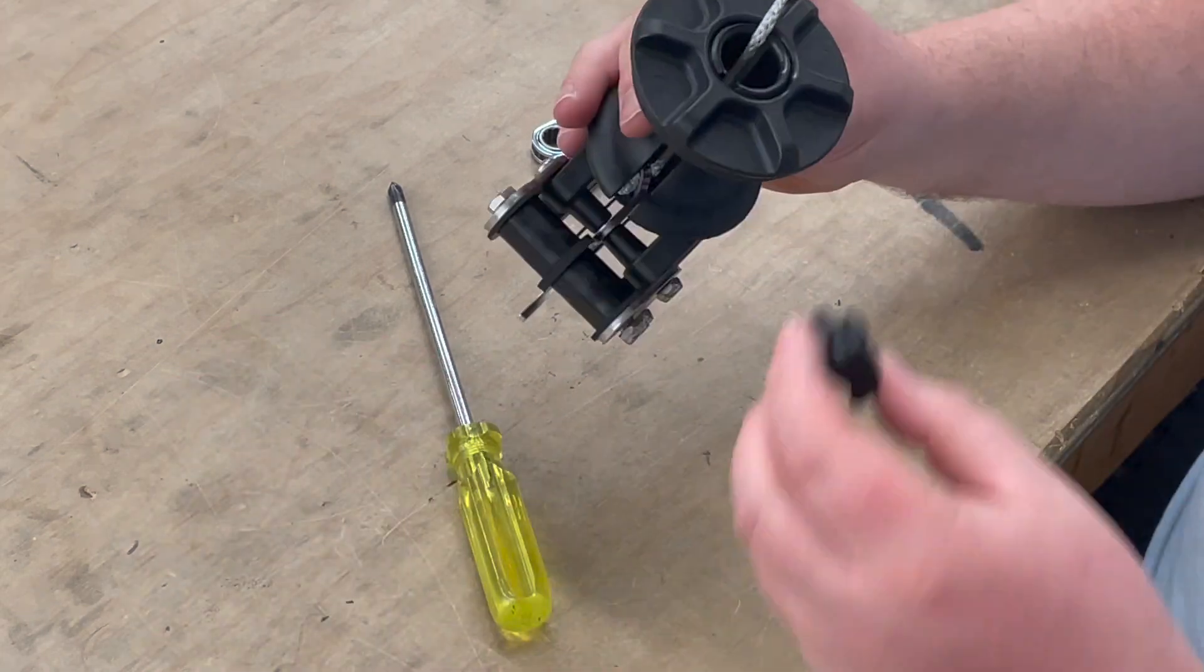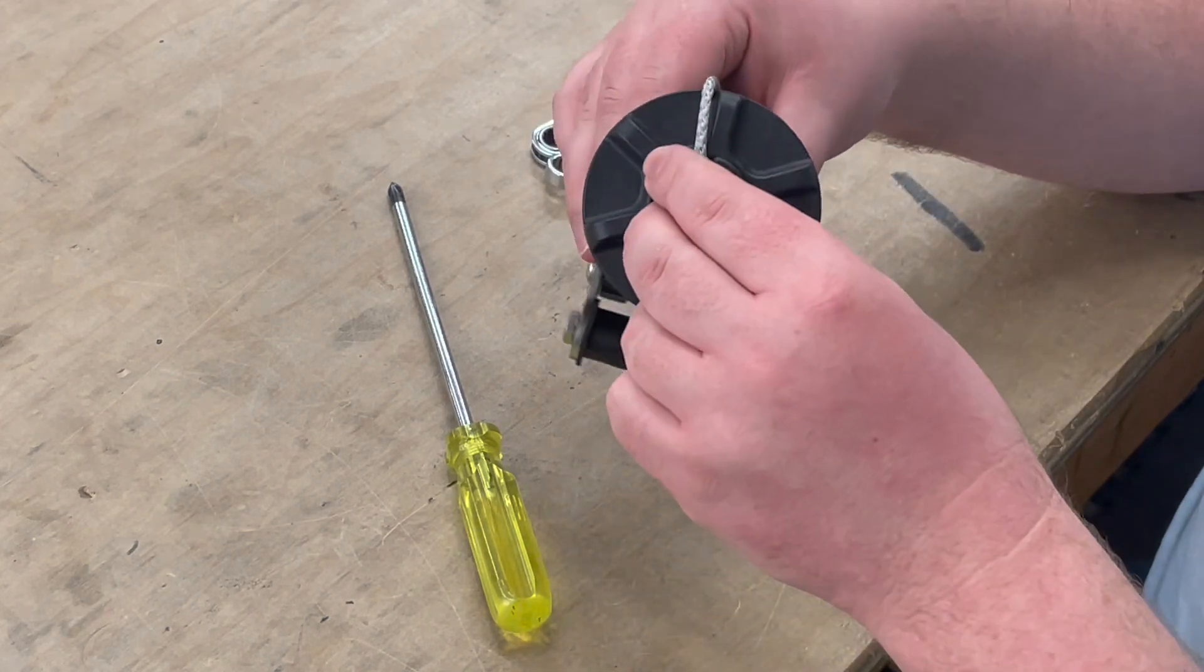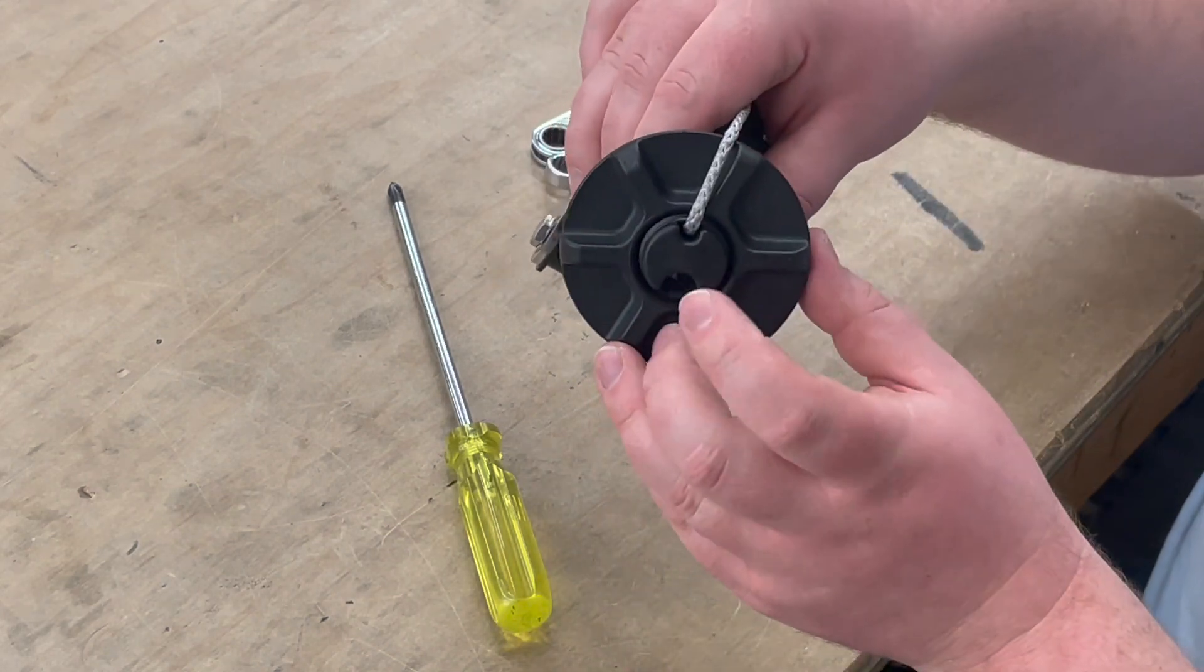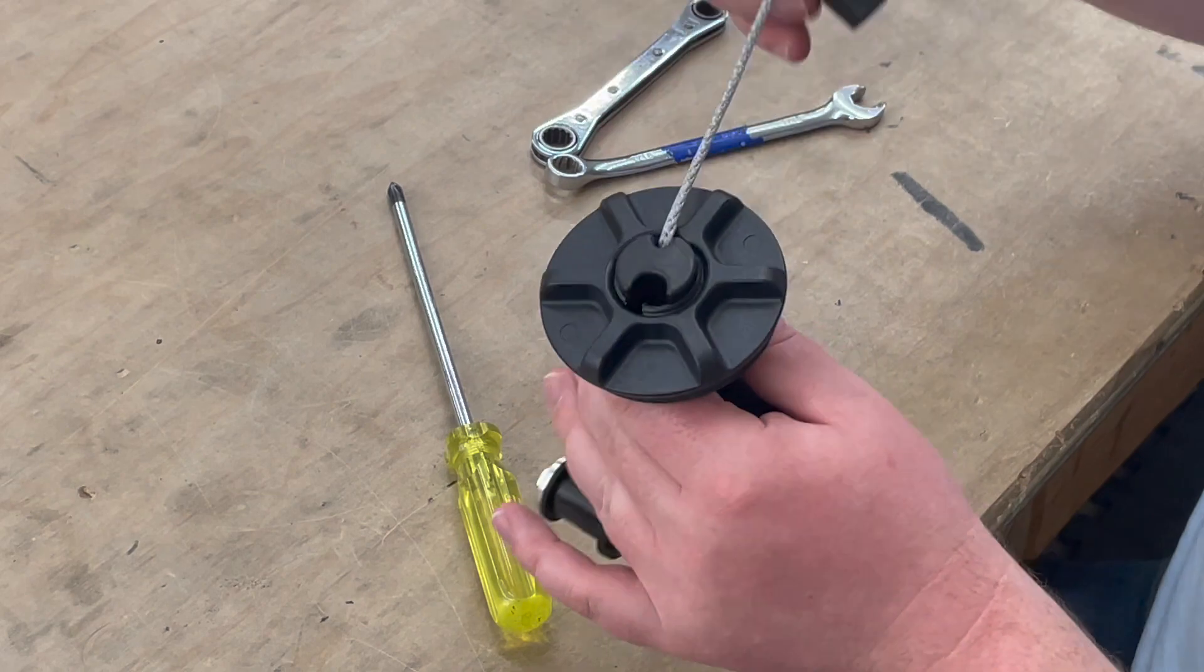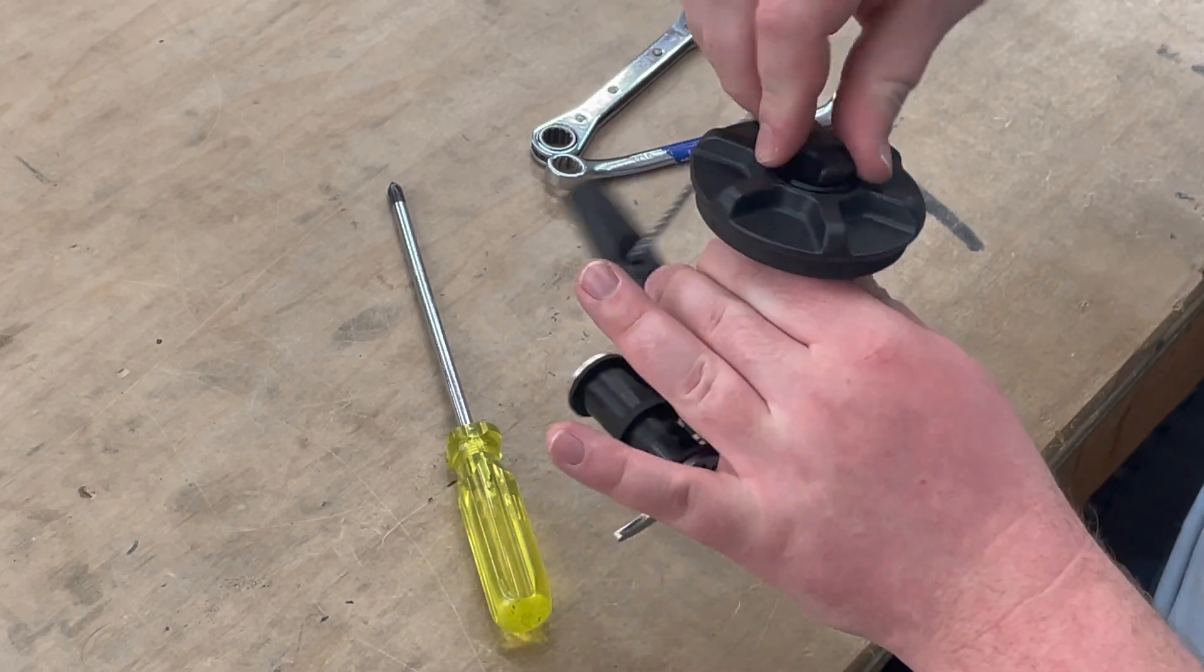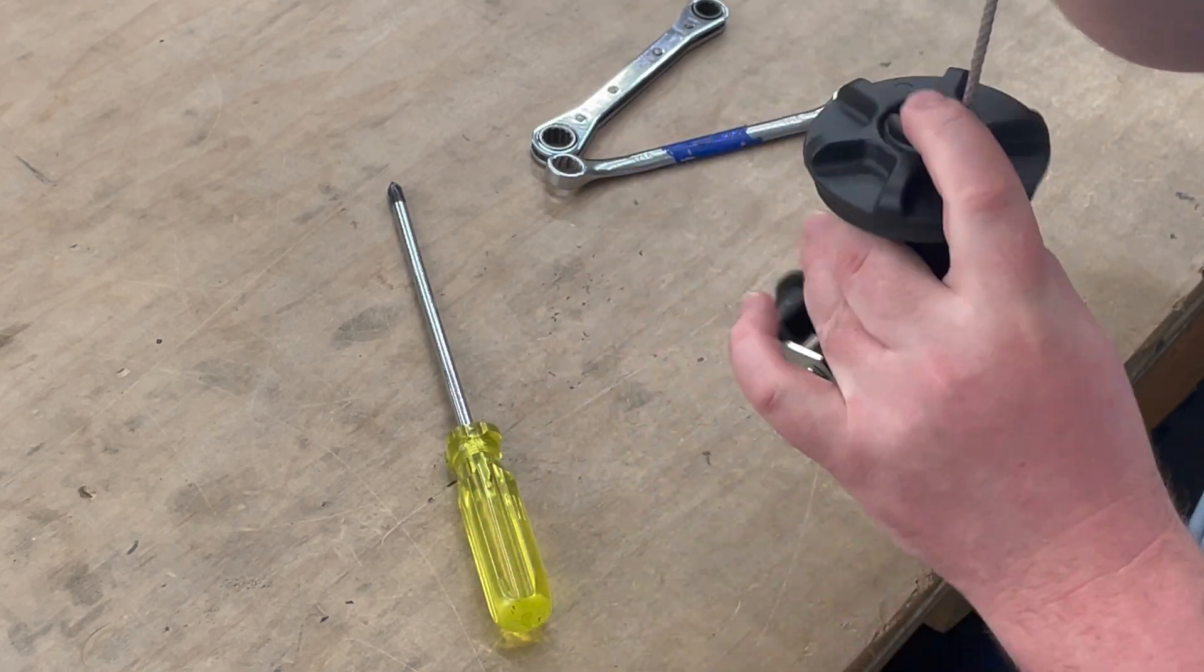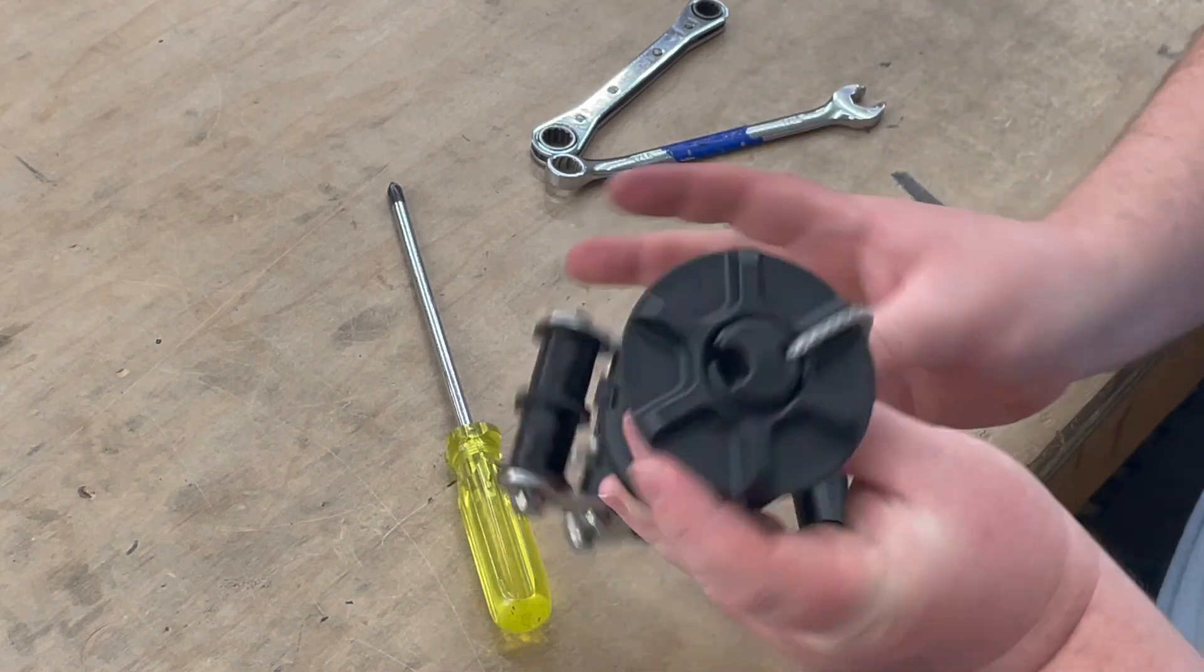Then for the plug, pretty straightforward. Just insert it there. Line up the smaller hole with the pull rope here. And there you have it.